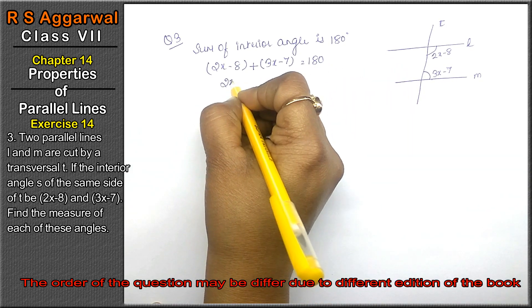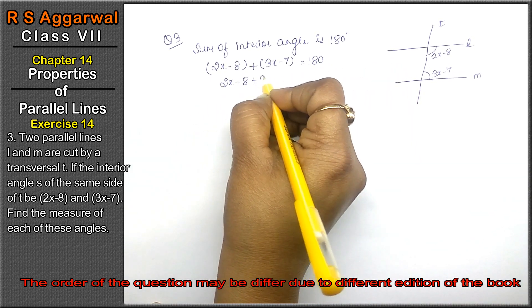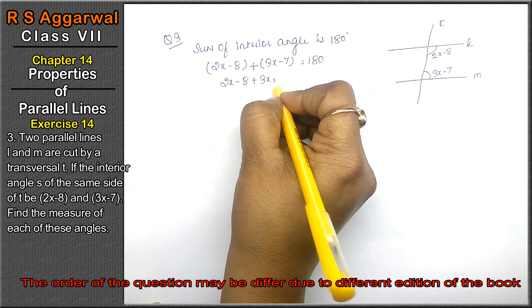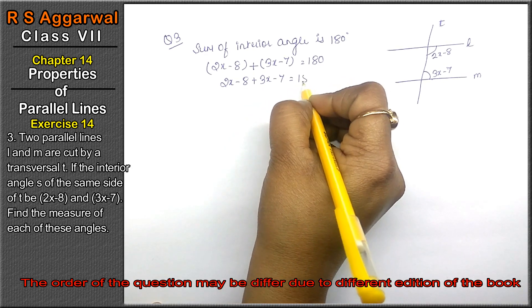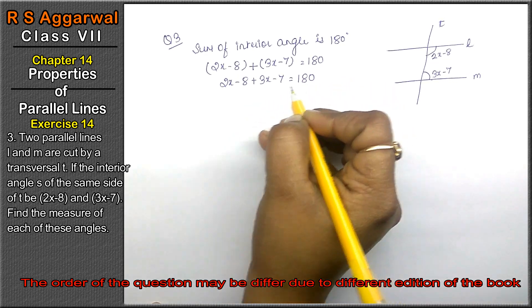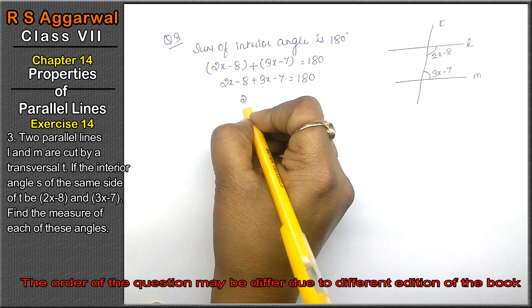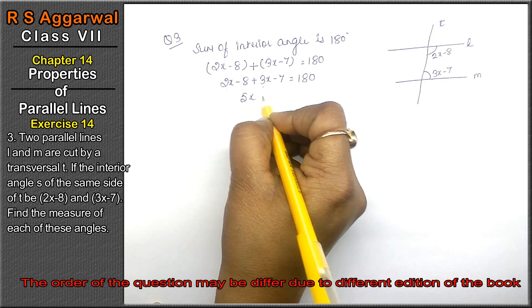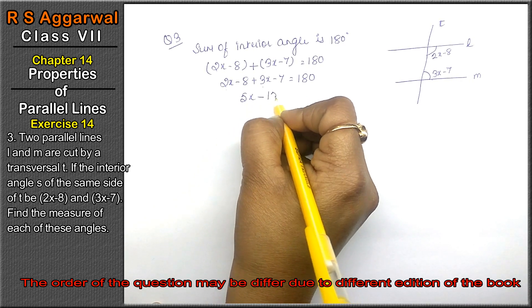Opening the brackets: 2x - 8 plus 3x - 7 equals 180 degrees. Combining like terms: 2x + 3x = 5x, and -8 - 7 = -15.